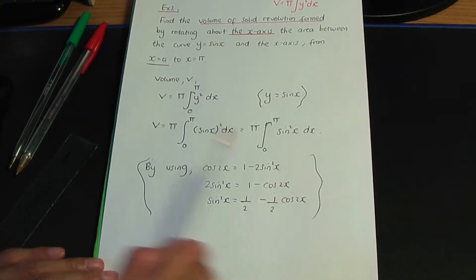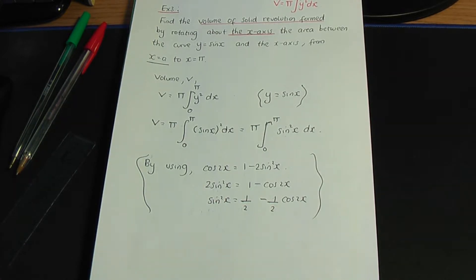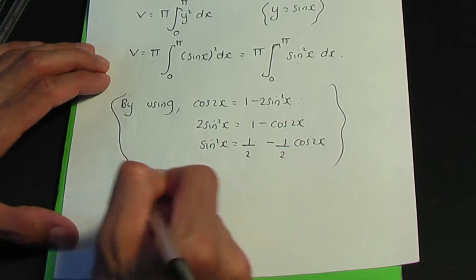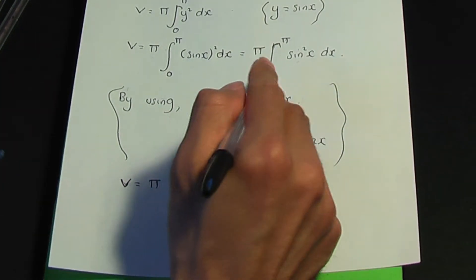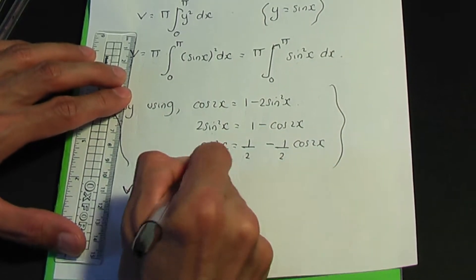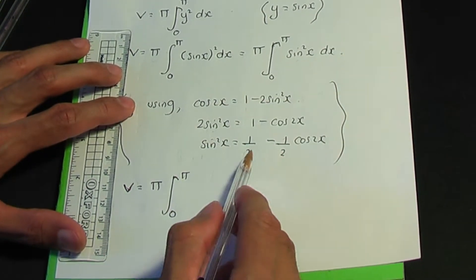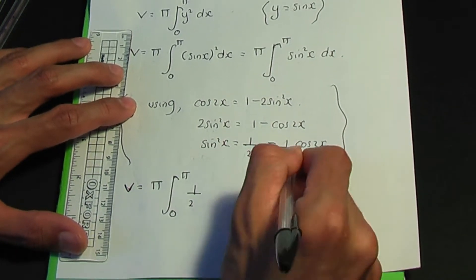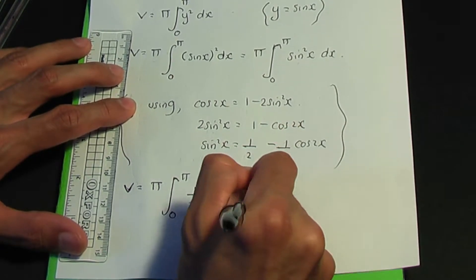If you're unfamiliar with integrating trigonometric functions, I did a video on the integration of trigonometric functions — I'll provide a link to that video in the description below, so be sure to check it out. Back to the example: V equals pi, integration with limits 0 and pi of sine squared x. We rearrange the identity to get half minus one half cos 2x.